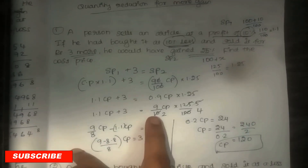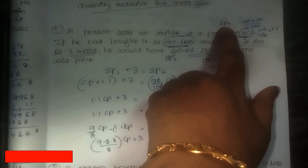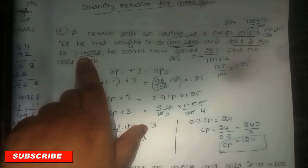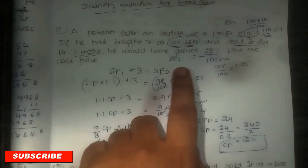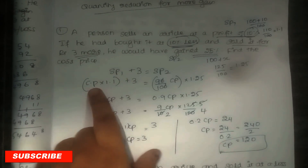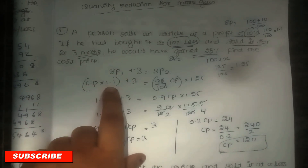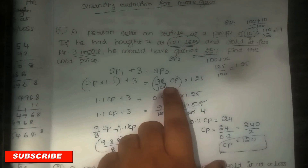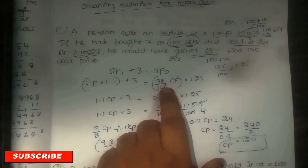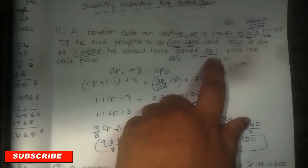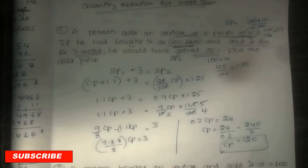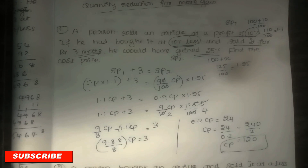So for this problem, you have to take SP1. For SP1, calculate CP × profit percentage + 3 to get SP2. For SP2, take the reduced CP as 90% of CP, then multiply by the second profit percentage. Then equate and solve to get the answer. In this way, let us go to solve another problem.